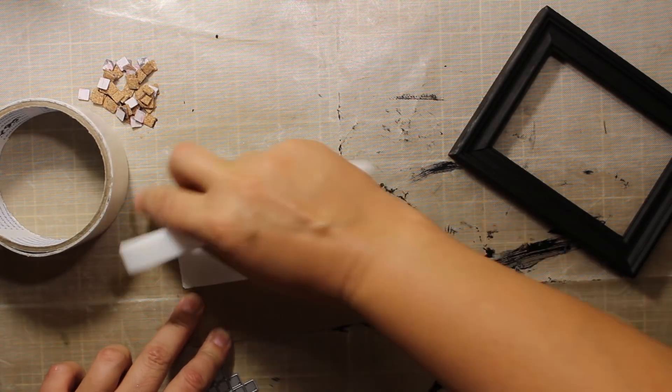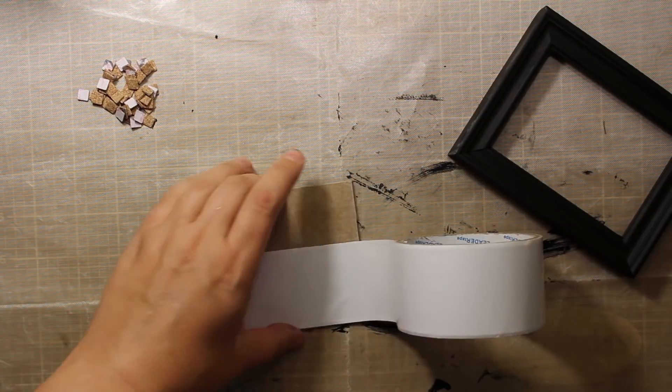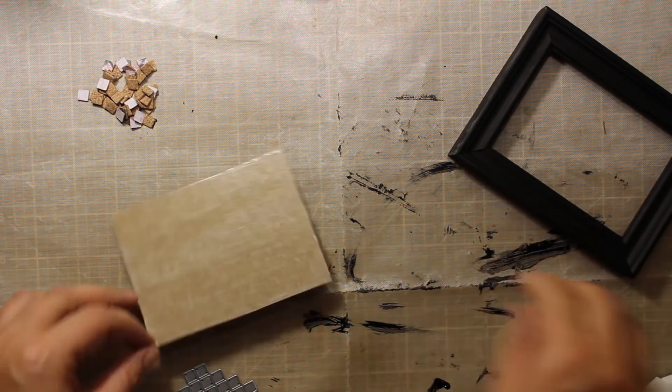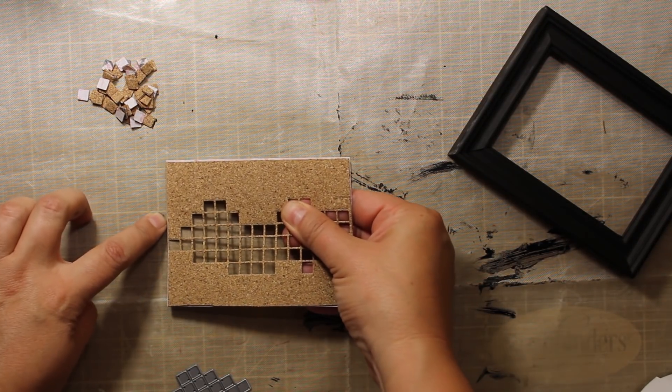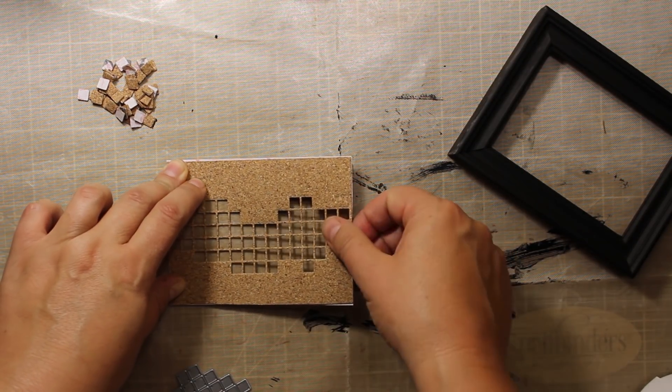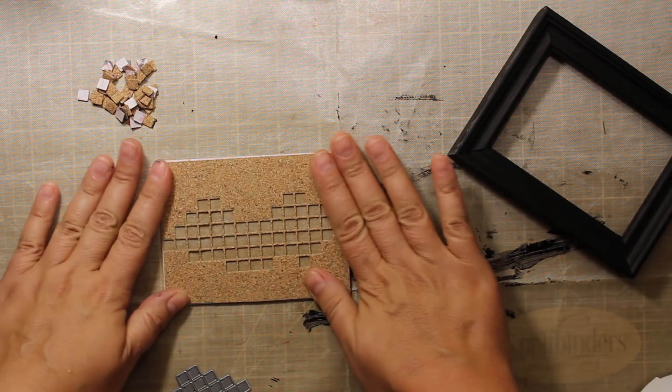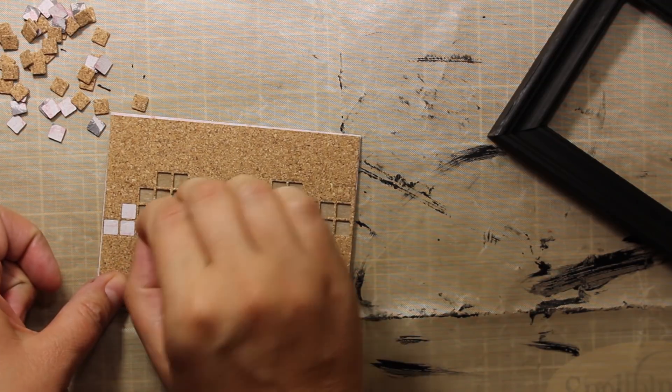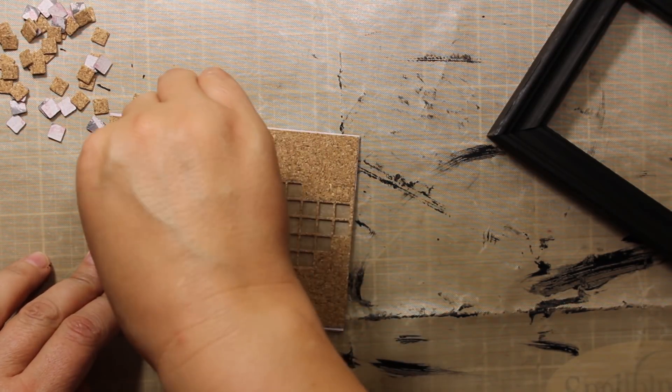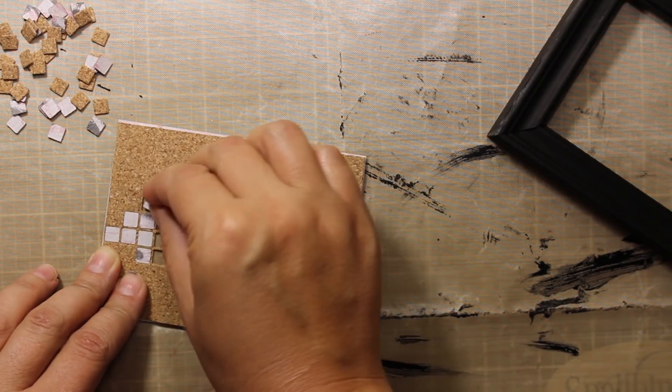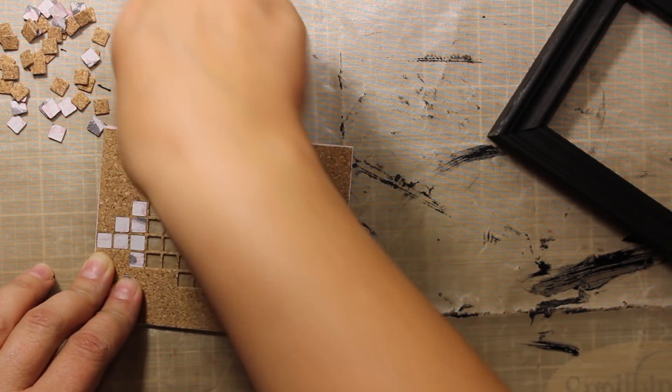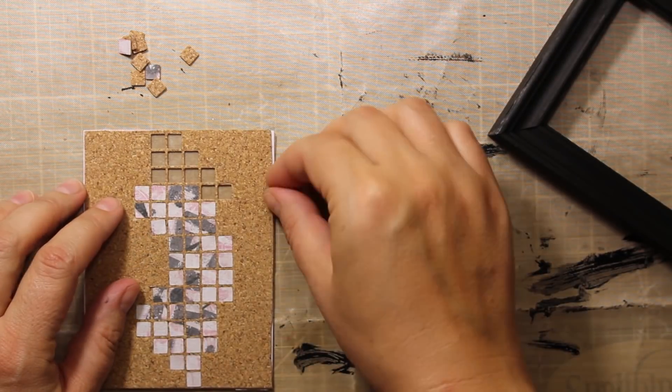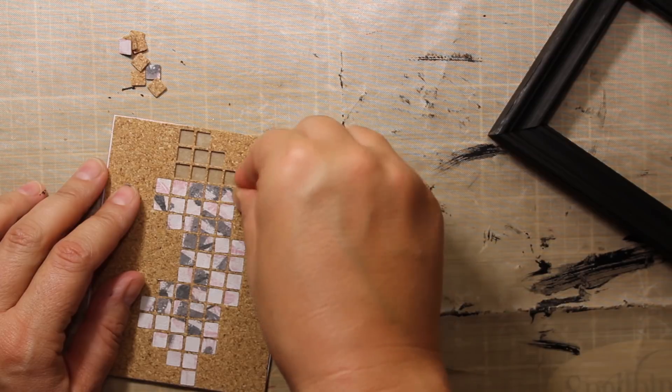Now I'm applying some double-sided tape onto the backing and then I'm going to stick the cork background on top of it. Now I'm inlaying all the squares back into their place. This is totally optional but I'm placing them upside down. I just think that I'm going to add more layers on top of them later and it will be easier to stick it to the paper rather than to the cork.